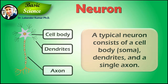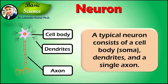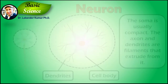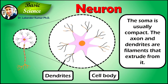Now let's discuss what a neuron is. A typical neuron consists of a cell body which is called soma, dendrites and a single axon. The soma is usually compact. The axon and dendrites are filaments that extrude from it.